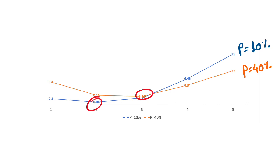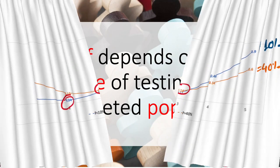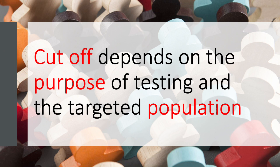The bottom line? The cut-off should not be fixed or assumed to be an intrinsic property of a test. The cut-off should change depending on the purpose of testing and the targeted population. Thank you.